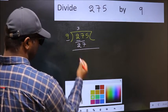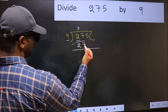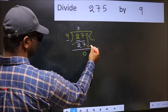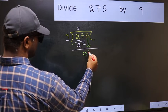Now you should subtract. 27 minus 27 is 0. After this, bring down the beside number. So, 5 down.